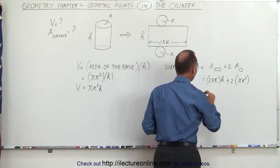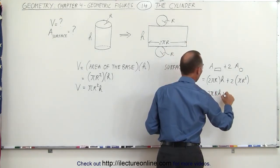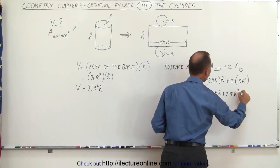And then when we combine that, this can then be written as 2 pi r h plus 2 pi r squared.